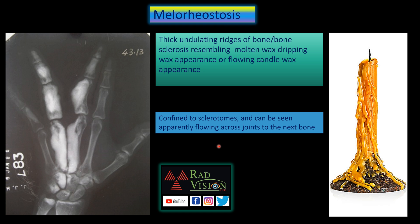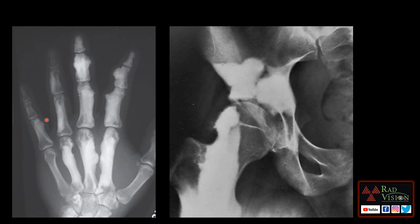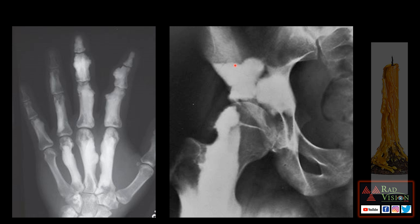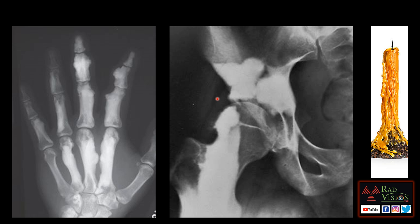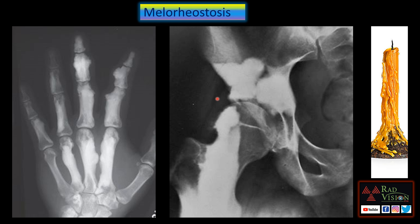This is the classical case of melorheostosis. Other cases of melorheostosis also show thick undulating bony sclerosis in a sclerotomal distribution crossing joints — here involving the femur, crossing the hip joint, involving the acetabulum and pelvic bones, mimicking the candle wax appearance.